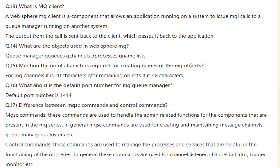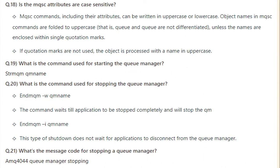What is the difference between MQSC commands and control commands? MQSC commands are used to handle admin-related functions for components in MQ series — in general, they are used for creating and maintaining message channels, queue manager clusters, etc. Control commands are used to manage processes and services — generally used for channel listeners, channel integration, or trigger monitors. MQSC attributes are not case sensitive and can be written in uppercase or lowercase. However, object names in MQSC commands are folded to uppercase if quotation marks are not used.